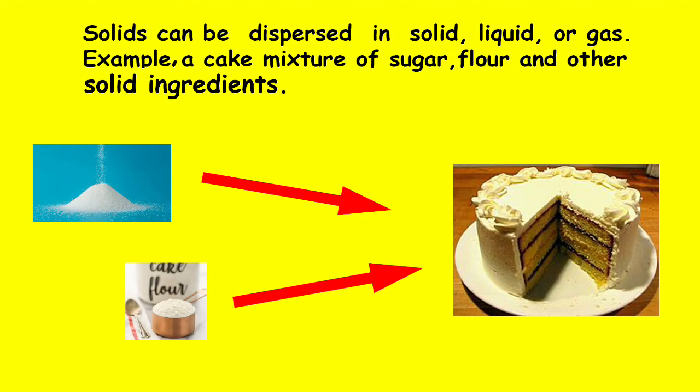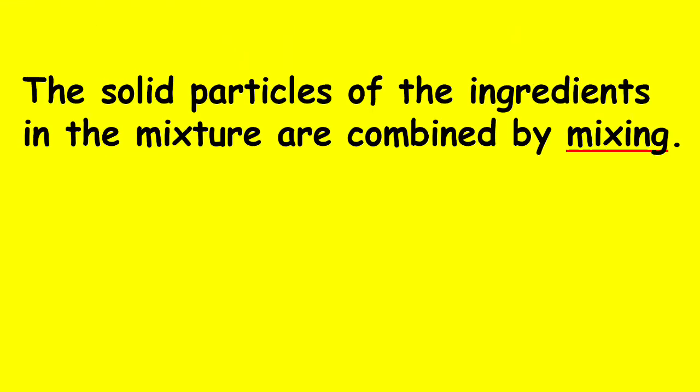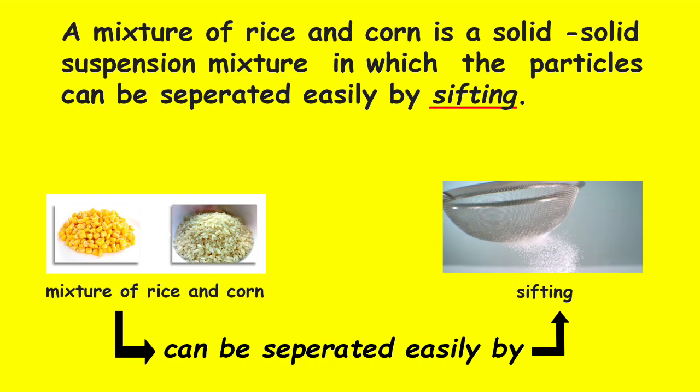Now let's have the types of suspensions. Solids can be dispersed in solid, liquid, or gas. For example, a cake mixture of sugar, flour, and other solid ingredients — the solid particles of the ingredients in the mixture are combined by mixing. A mixture of rice and corn is a solid-solid suspension mixture in which the particles can be separated easily by sifting.